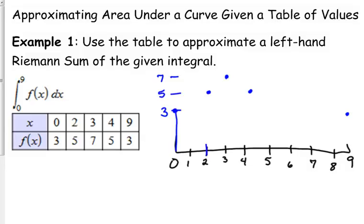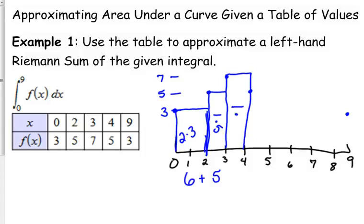So to do the Riemann sum here, our first interval is from 0 to 2, and it wants a left-hand. So there's our first rectangle. It has a width of 2 and a height of 3, so it has an area of 6. Our next one goes from 2 to 3. But left-hand, we use the y value of 2. So this one has a width of 1 and a height of 5, so it has an area of 5. The next one, we go from 3 to 4, to the y value of 3 over to 4. So another width of 1, but this one has a height of 7, so its area is 7.